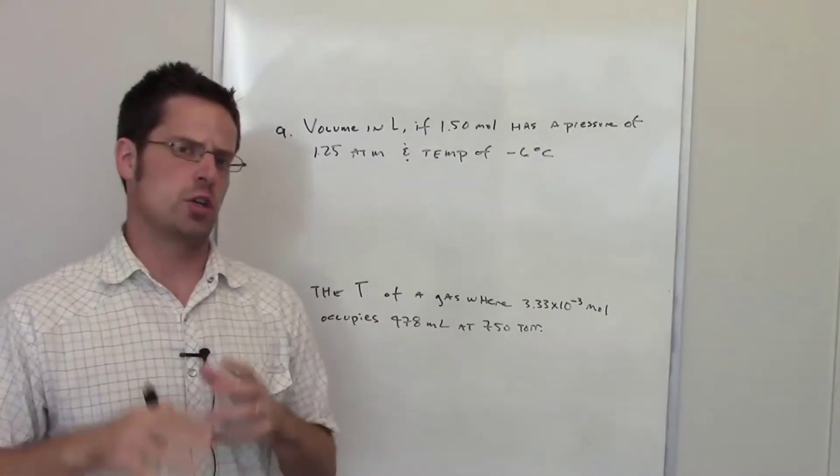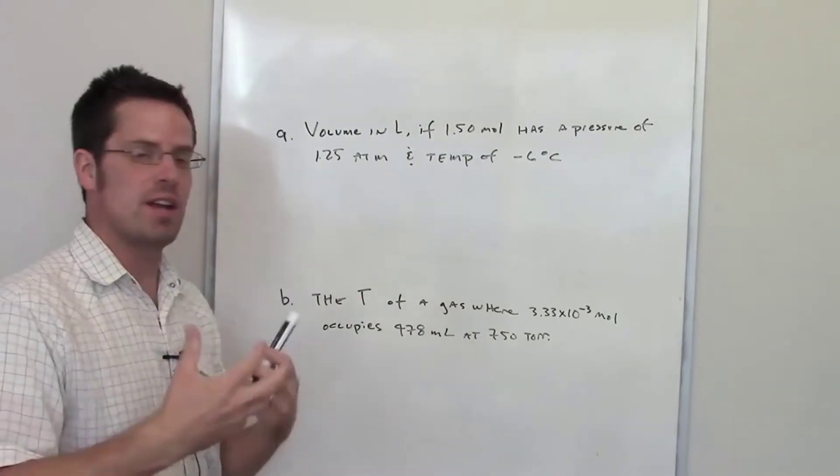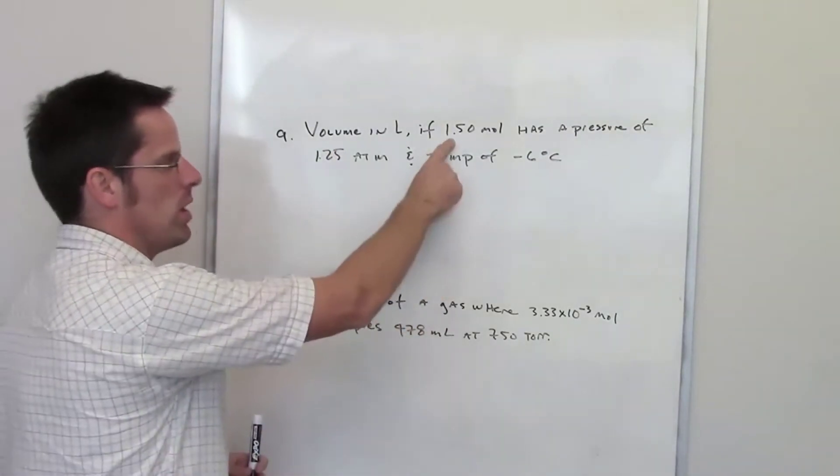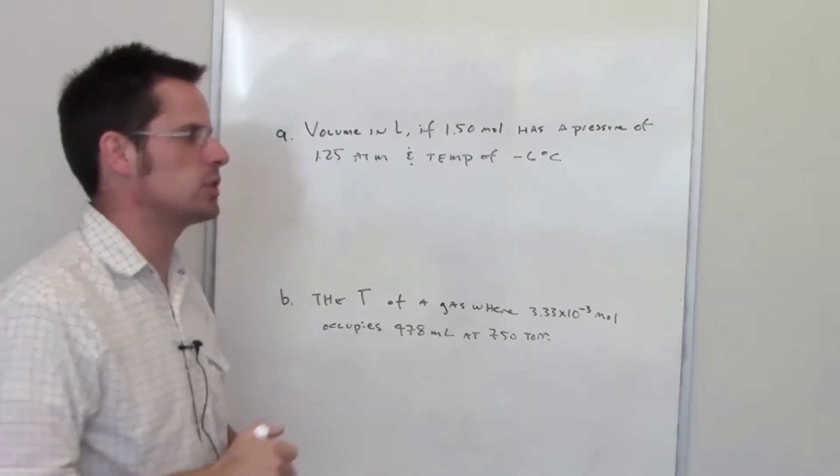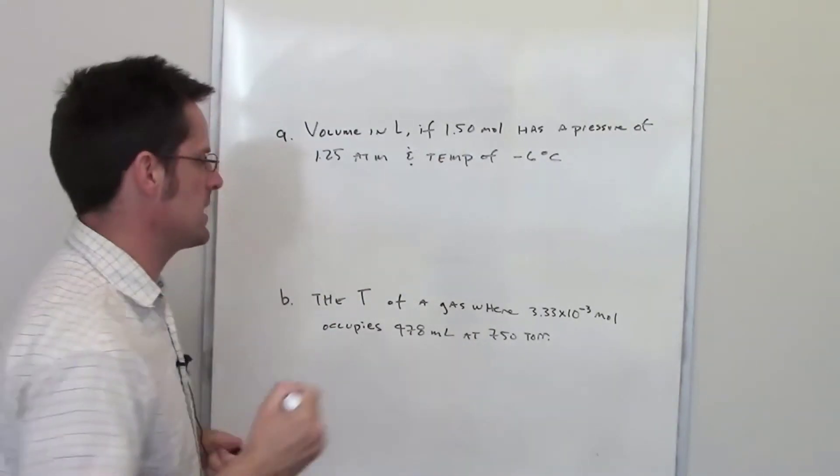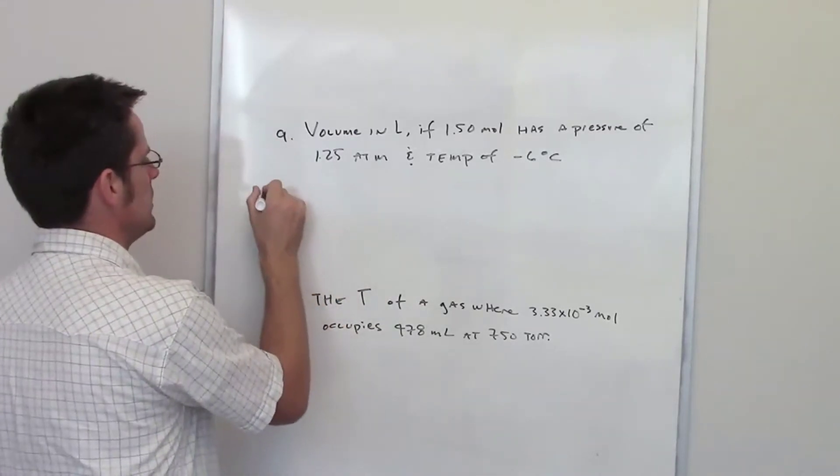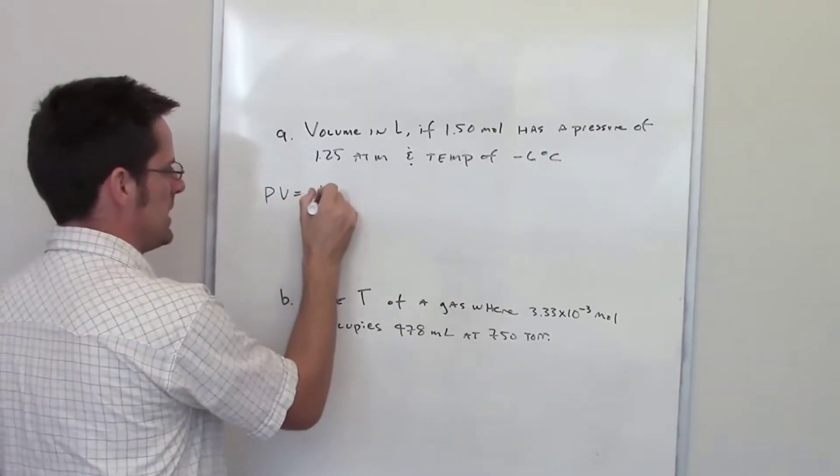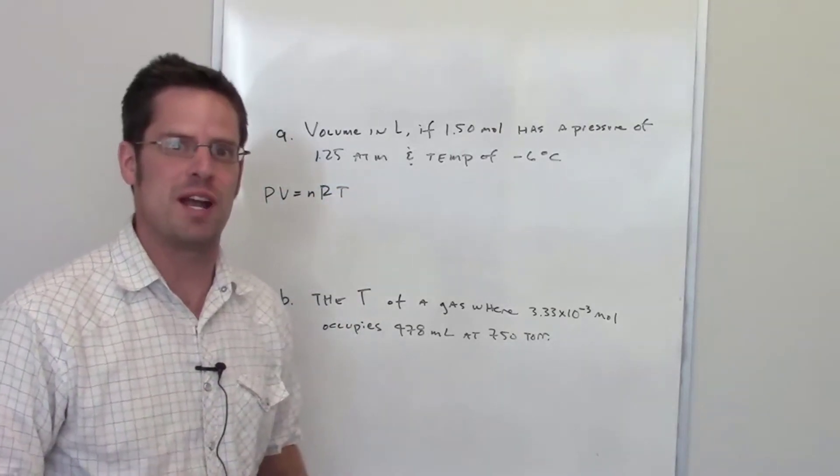This first question asks us to calculate the volume in liters of an ideal gas if 1.5 moles of it has a pressure of 1.25 atmospheres and a temperature of negative 6 degrees Celsius. Of course, this is going to involve the ideal gas law, which is PV equals nRT. Sometimes I call that the pervnert equation, or if I'm speaking too quickly, the pervert equation.